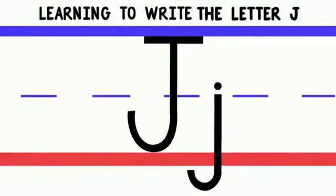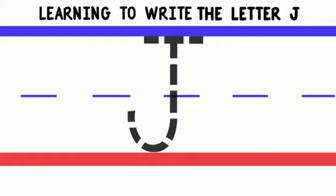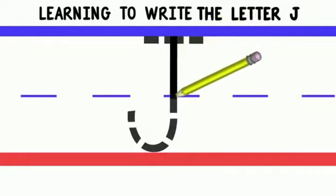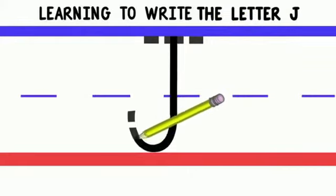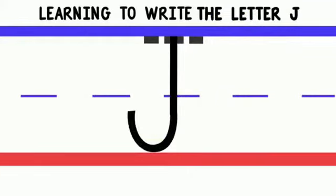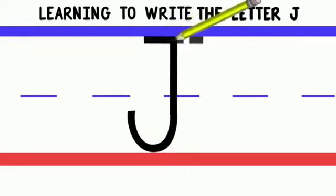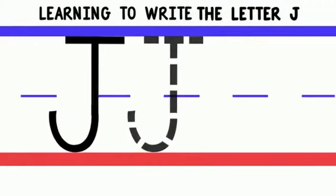We'll start with uppercase or big J. To write uppercase J, we'll start at the top and do a line down, then curve at the bottom. Then we'll go back to the top and do a line across. Good job!